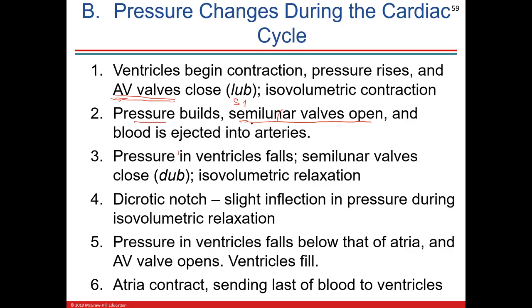Now pressure is building up in the ventricles with the outflow valves — the semilunar valves, like the pulmonary valve and the aortic valve. The AV valves are closed. The tricky part: the pressure in the ventricles has to overcome the pressure in the aorta. If there's enough pressure to open those valves, the blood is ejected. Once the blood is ejected, you don't want backflow — valves prevent regurgitation. So the semilunar valves close, and that's where you get S2, the second heart sound.